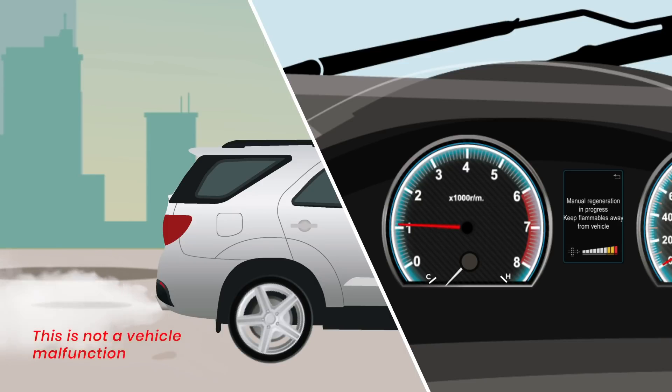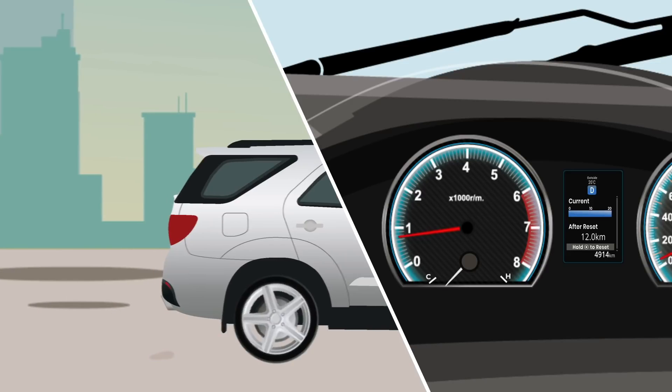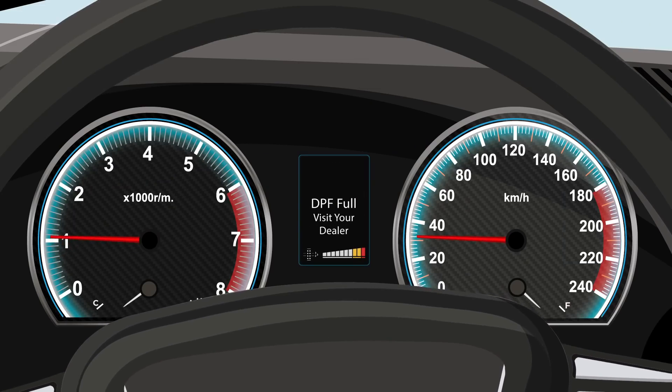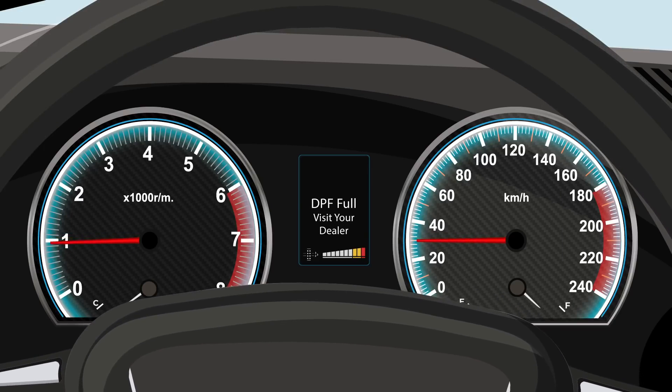When the DPF system warning message disappears, the engine RPM will return to normal and you may continue to drive your car. However, if the DPF full visit your dealer message continues to appear on the display, have your car immediately inspected at the nearest Toyota dealer.